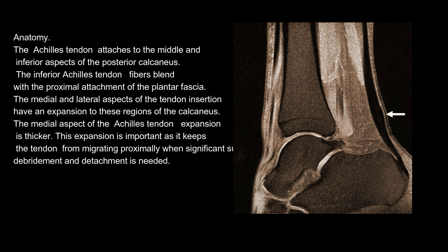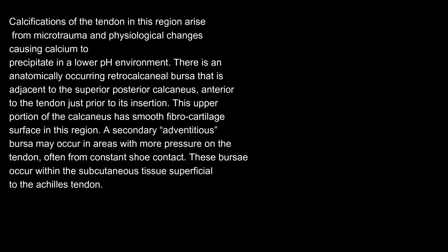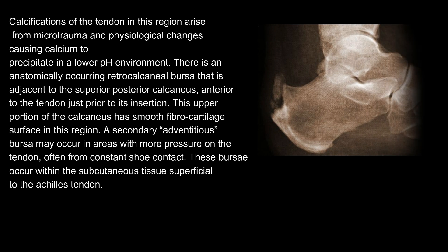Anatomy. The Achilles tendon attaches to the middle and inferior aspects of the posterior calcaneus. The inferior Achilles tendon fibers blend with the proximal attachment of the plantar fascia. The medial and lateral aspects of the tendon insertion have an expansion to these regions of the calcaneus. The medial aspect of the Achilles tendon expansion is thicker. This expansion is important as it keeps the tendon from migrating proximally when significant surgical debridement and detachment is needed. Calcifications of the tendon in this region arise from microtrauma and physiological changes causing calcium to precipitate in a lower pH environment. There is an anatomically occurring retrocalcaneal bursa adjacent to the superior posterior calcaneus, anterior to the tendon just prior to its insertion. This upper portion of the calcaneus has a smooth fibrocartilage surface in this region.